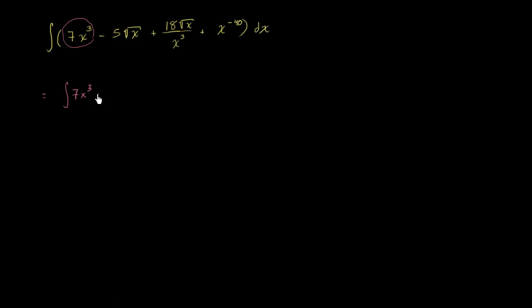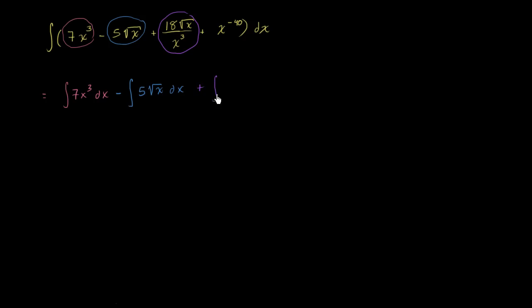So we have the integral of 7x³ dx. And then from that we can subtract the indefinite integral of 5 times the square root of x dx. And then we can say plus the indefinite integral of 18 square roots of x over x to the third dx.